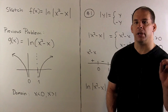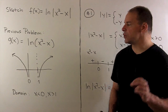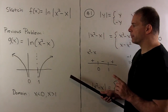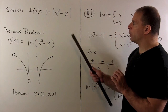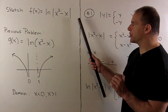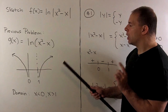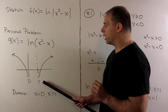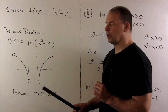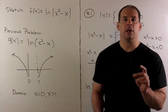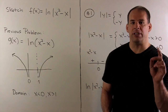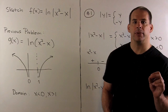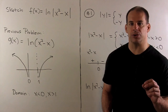In our previous problem, our final graph looked like this. So what will happen when we put the absolute value signs in? We're going to pick up a piece between 0 and 1. The big question is: how do we deal with the absolute value sign? There are two approaches we can use.